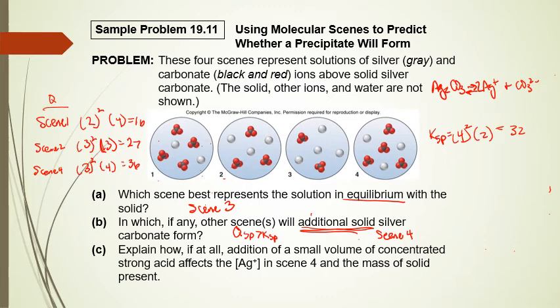If a small volume of concentrated strong acid is added to scene 4, it removes CO3²⁻ ions from solution. To compensate, the reaction shifts right, increasing Ag⁺ concentration. Therefore, the Ag⁺ concentration will go up and the amount of solid silver carbonate will decrease.